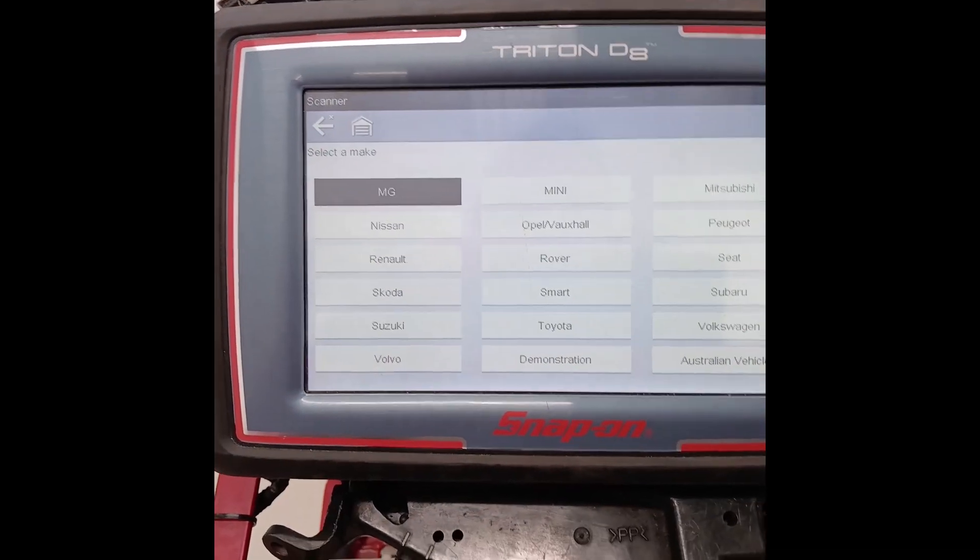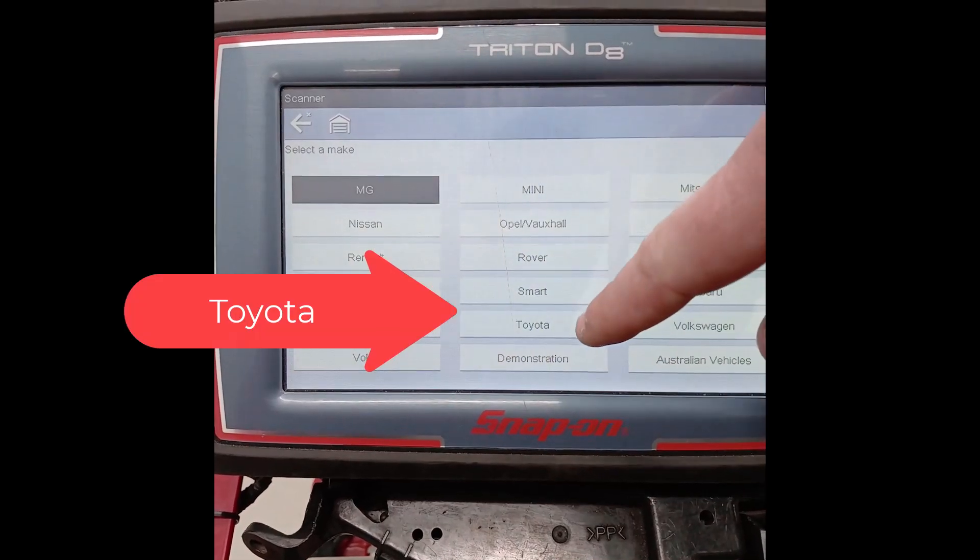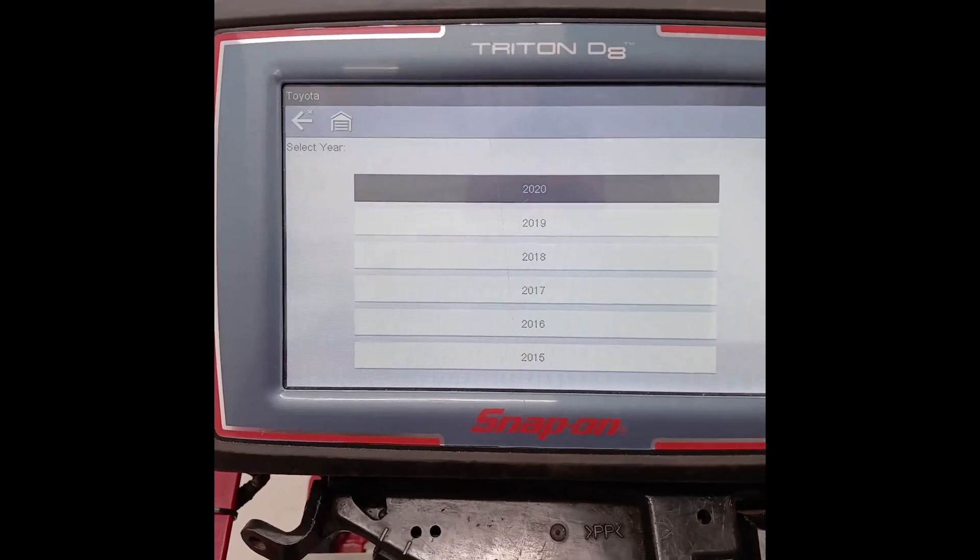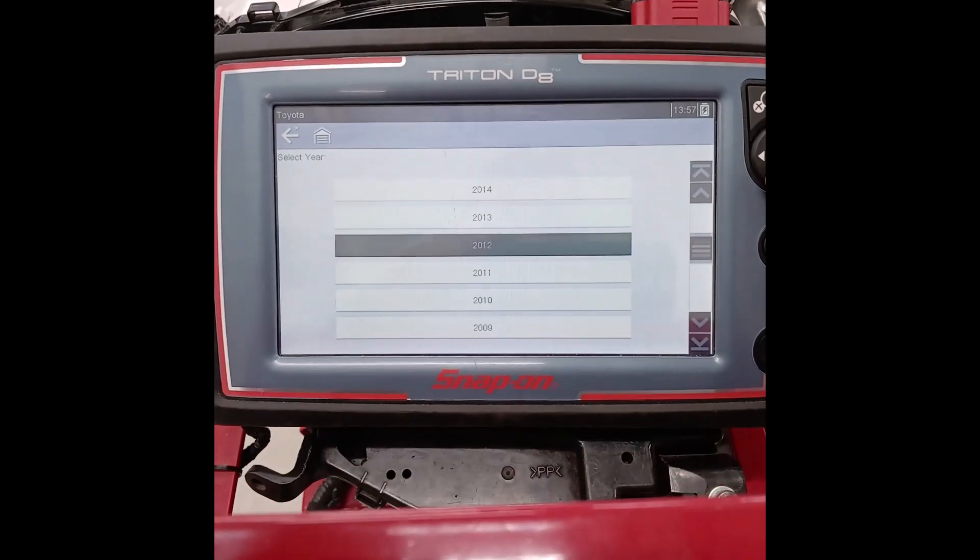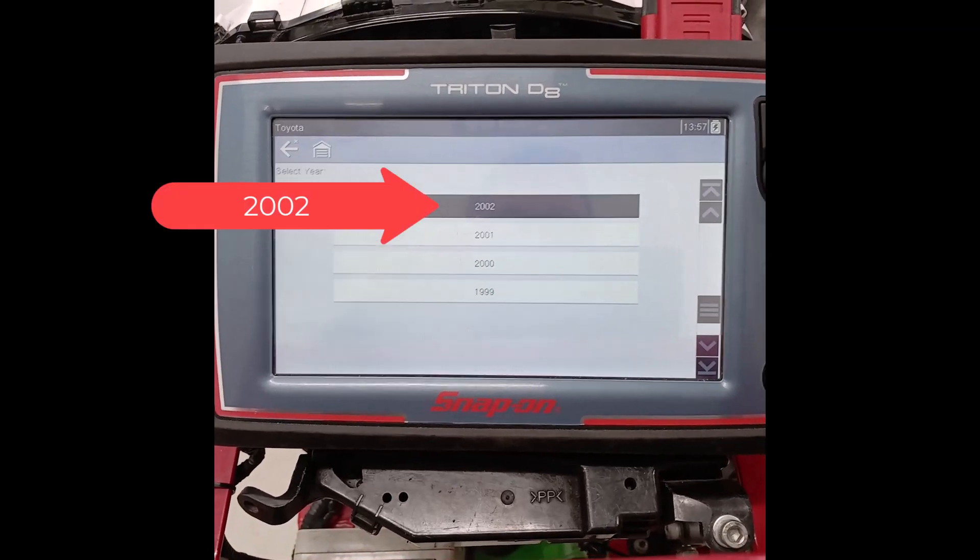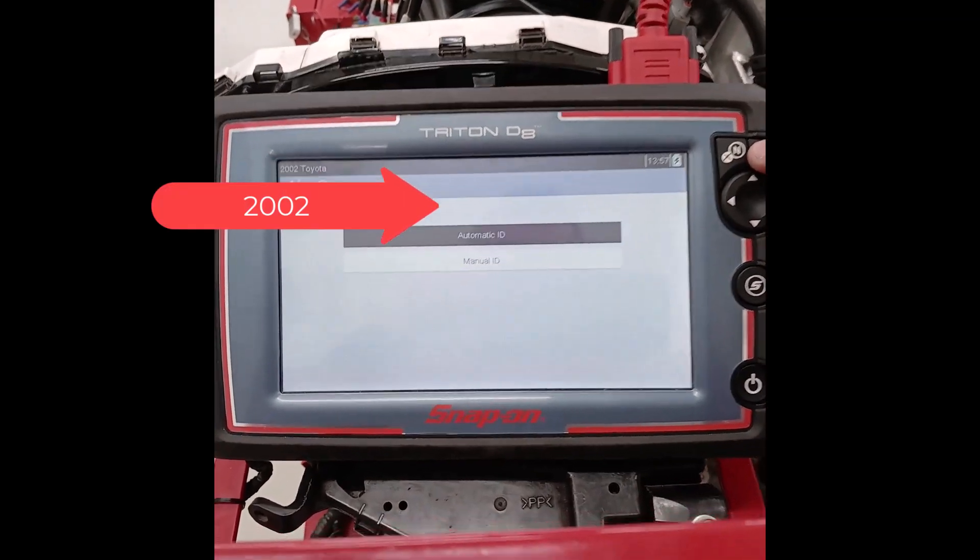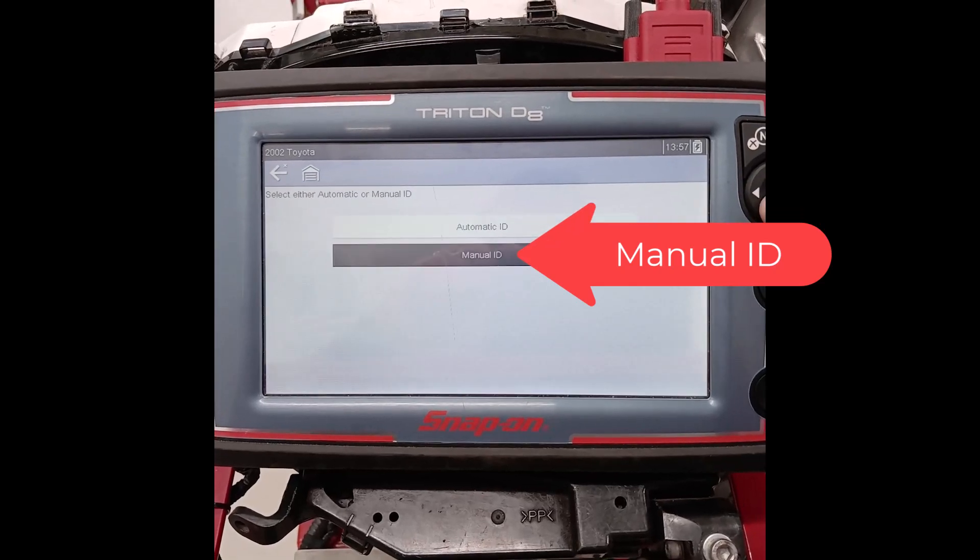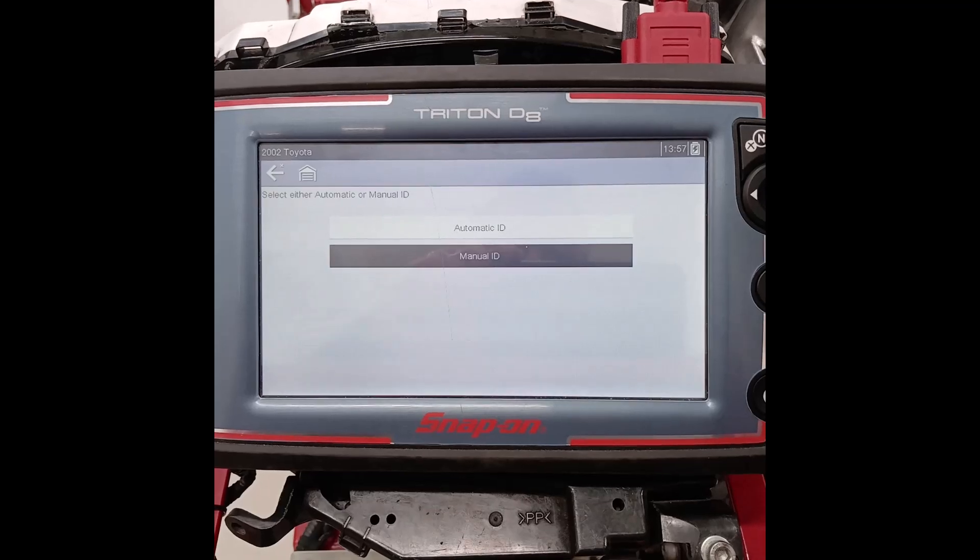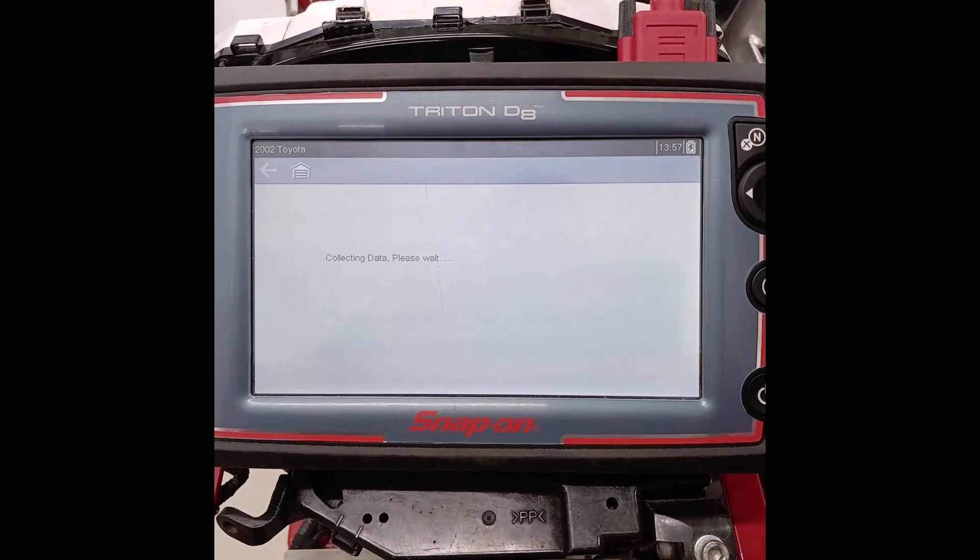So using the Snap-on diagnostics we're going to pick scanner in Toyota. I'm going to pick out 2002 in year. After that we're going to pick manual ID, it's much faster. And we're going to pick out a Toyota Yaris.